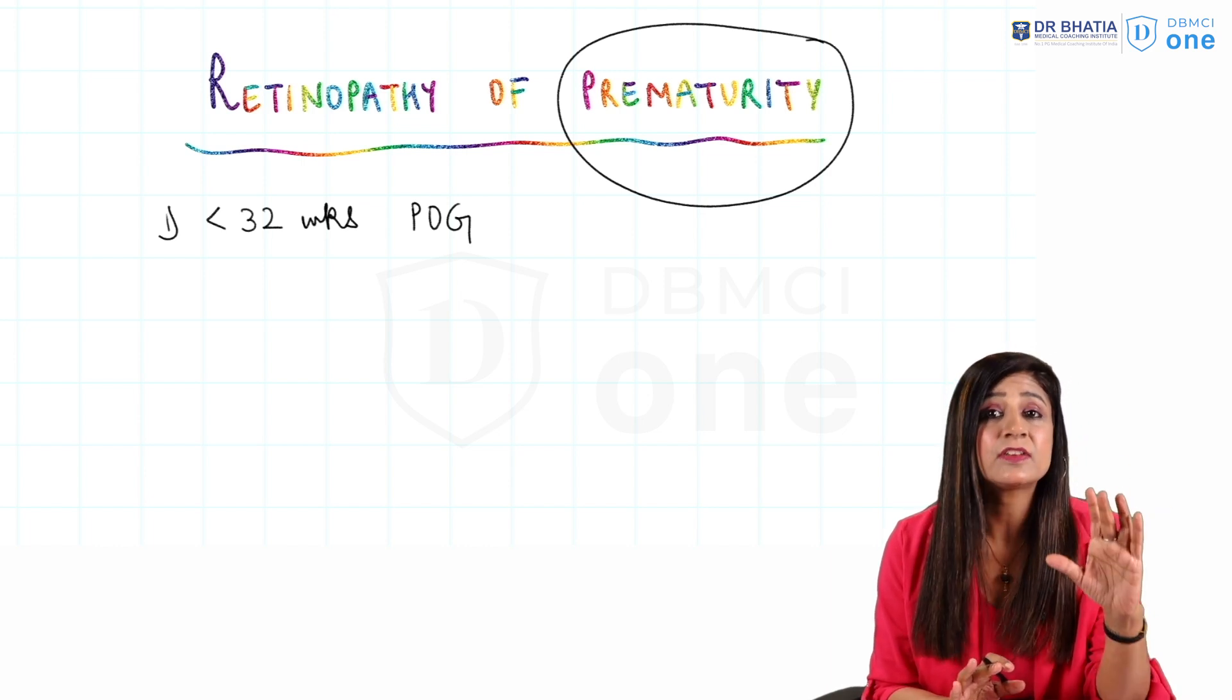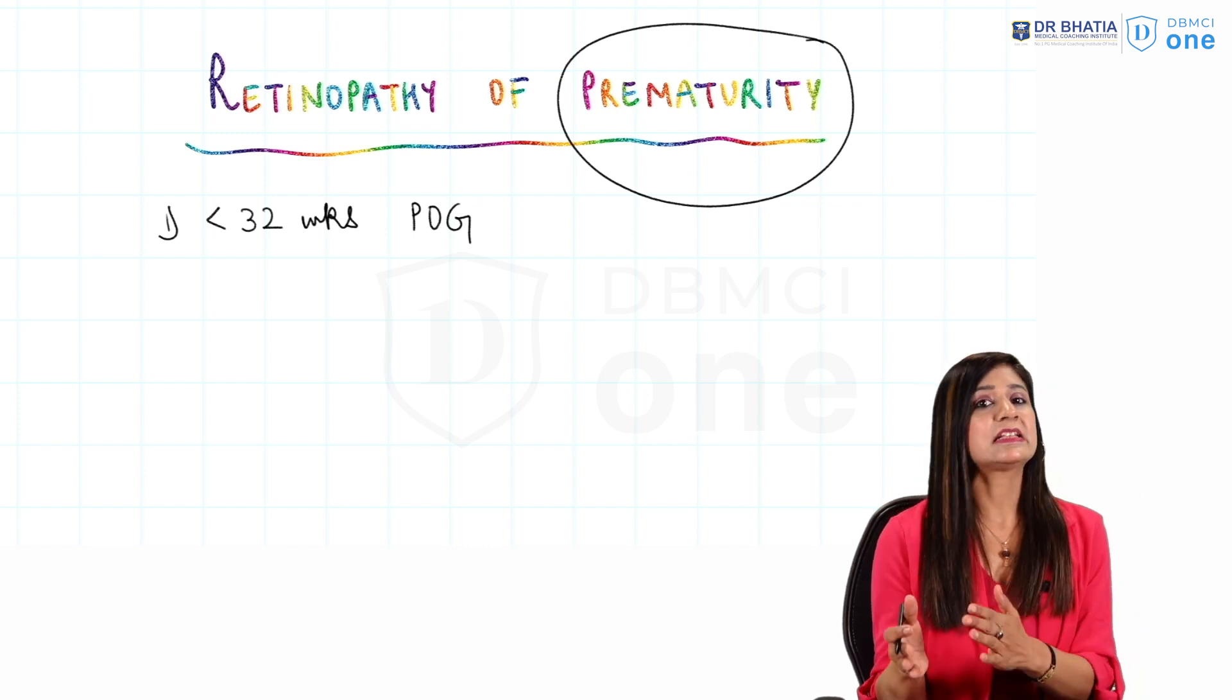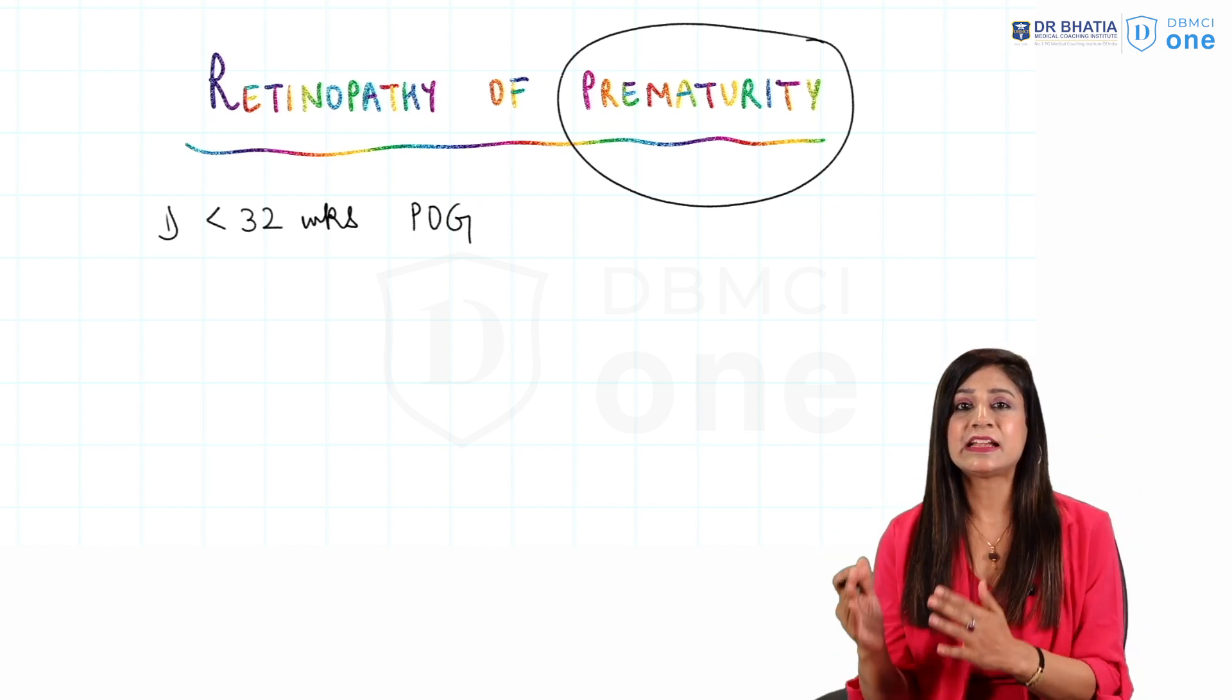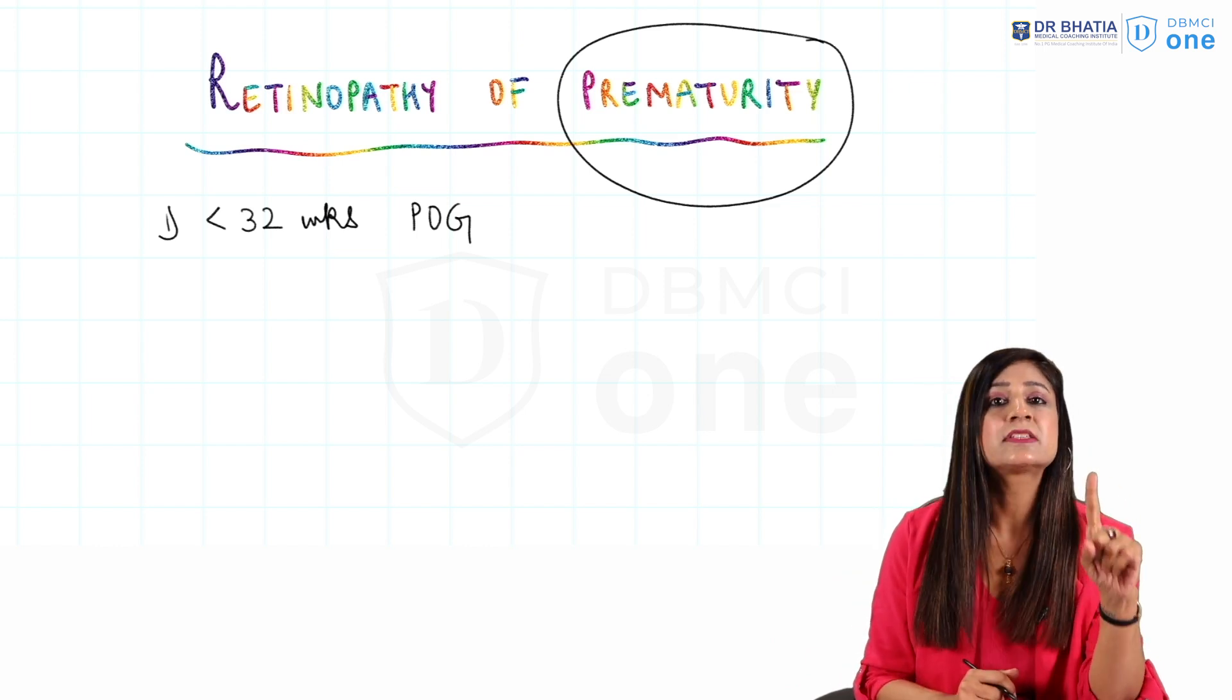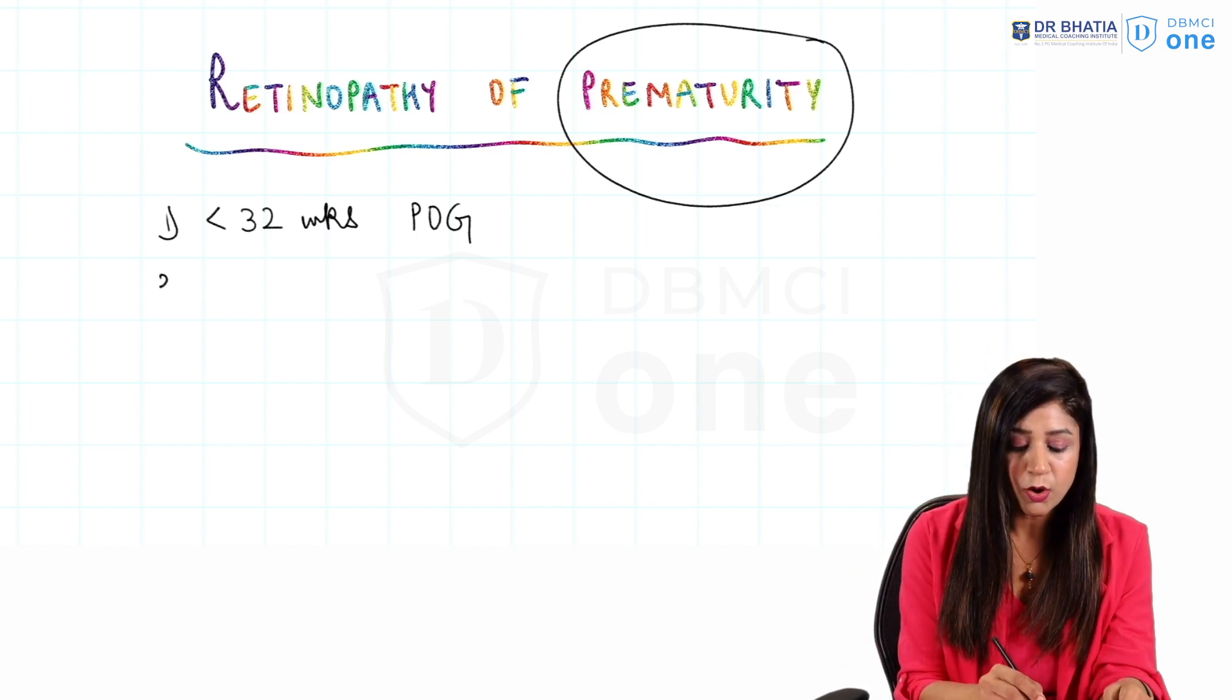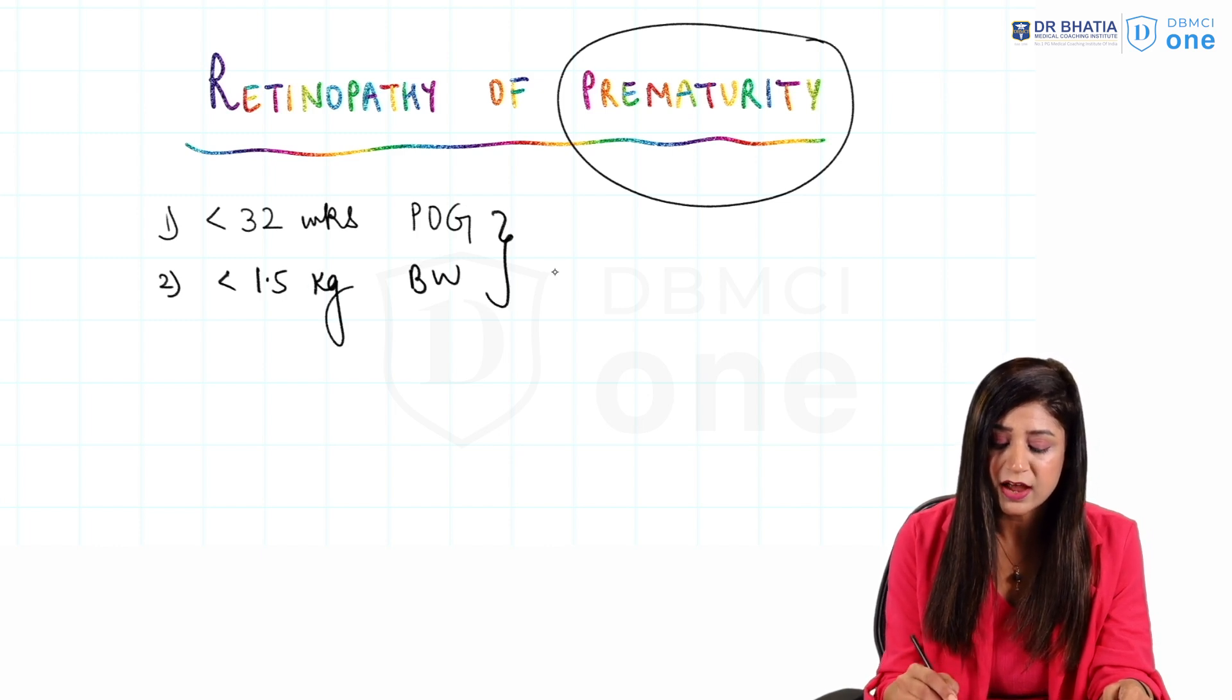Which they had given when they had started with the ROP, it was less than 32 weeks. Now according to the latest guidelines, the screening guidelines have changed that I will tell you after some time. So less than 32 weeks period of gestation or less than 1.5 kg of birth weight, these kind of babies if they are